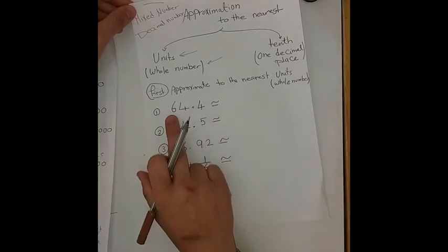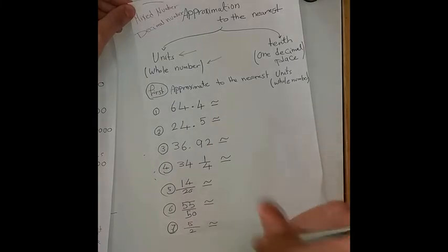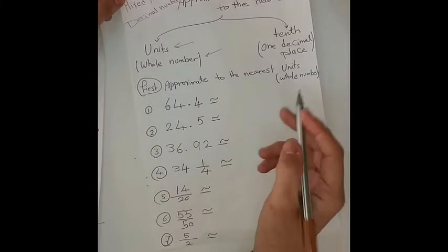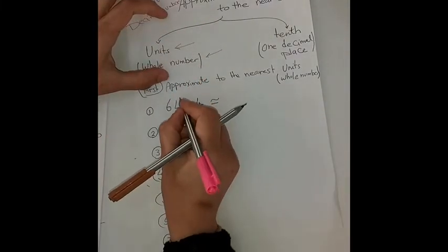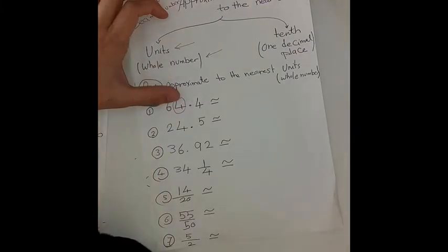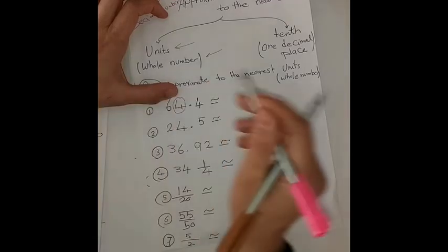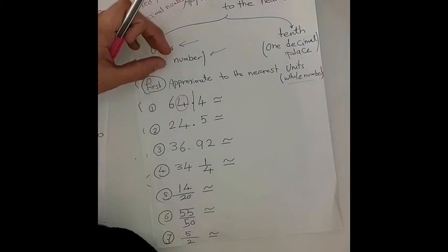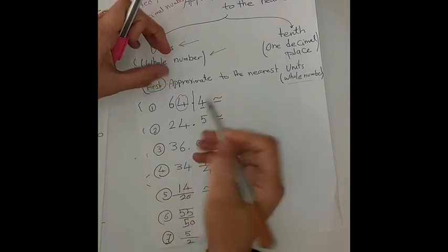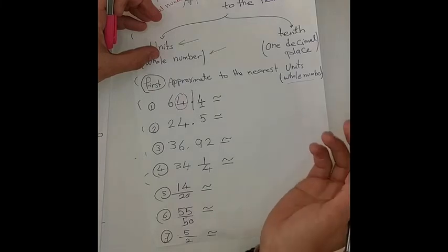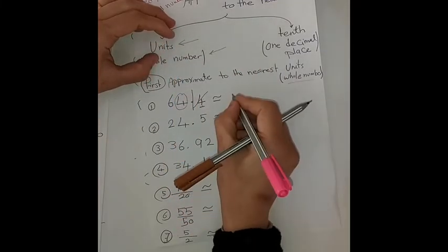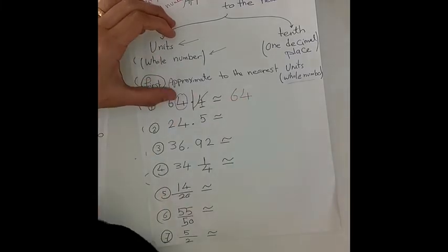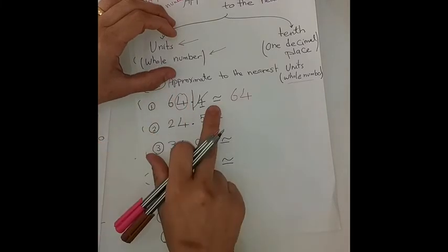Now I have this example: 64.4. This is a decimal number and I want to approximate it to the nearest units. We circle the units digit, which is 4. We build a whole and look to the neighbor, which is 4. Four is a poor digit, so we cancel it and keep only the whole number. So 64.4 is approximately equal to 64.